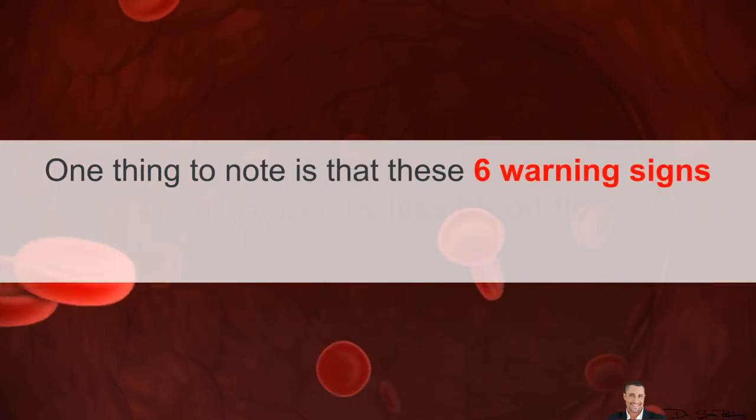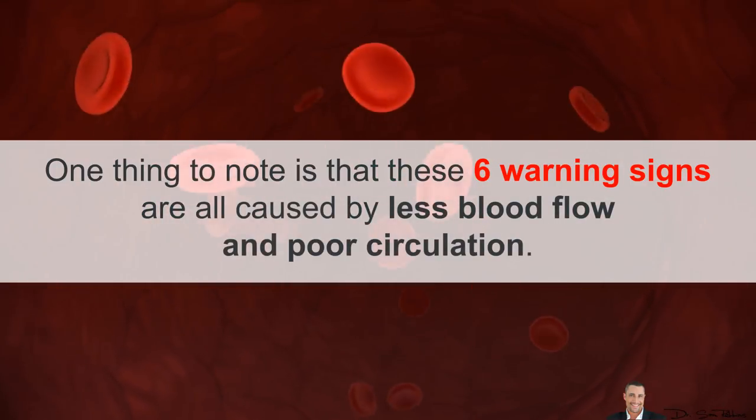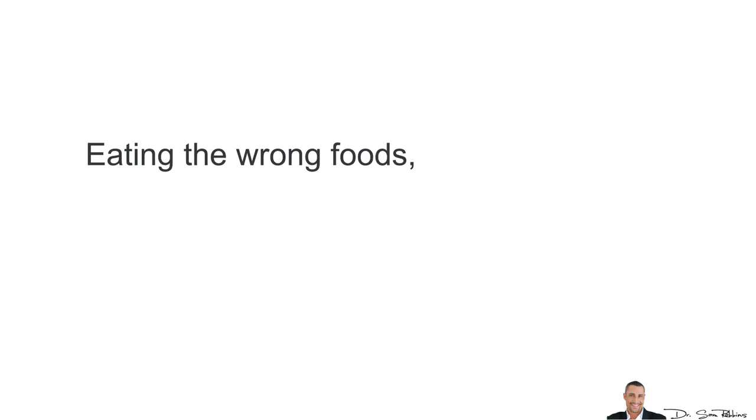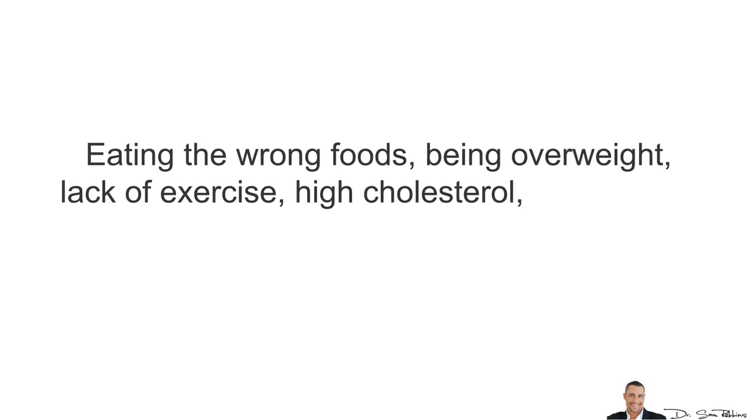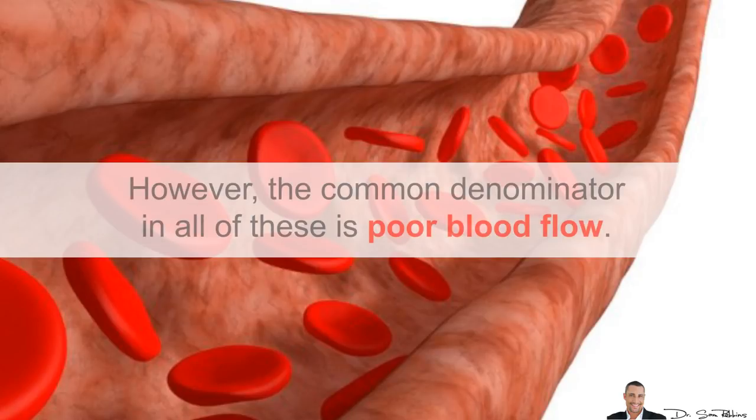There is a common denominator with all of this. One thing to note is that these six warning signs are all caused by less blood flow and poor circulation. Stress, eating the wrong foods, being overweight, lack of exercise, high cholesterol, high blood sugar, and blood pressure are all contributing factors to a heart attack or stroke. However, the common denominator in all of these is poor blood flow.